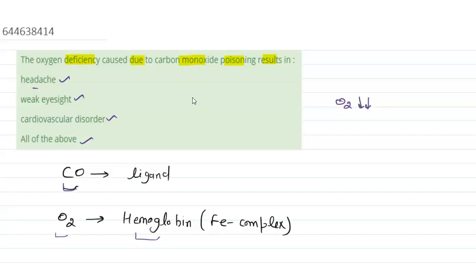This happens because carbon monoxide forms a stable complex with hemoglobin, which is an iron complex itself. That is why its oxygen carrying capacity decreases and these symptoms are observed. So all symptoms are observed with oxygen deficiency, meaning option D should be our answer. Thanks.